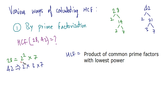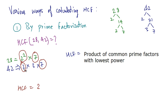It turns out that 2 and 7 are the common prime factors. So HCF equals the first common prime factor 2 — the lowest power of 2 amongst these is 1, so 2 raised to 1. The next common prime factor is 7, and the lowest power of 7 is also 1. So HCF is equal to 2 times 7, which is 14. The highest common factor of 28 and 42 is 14.